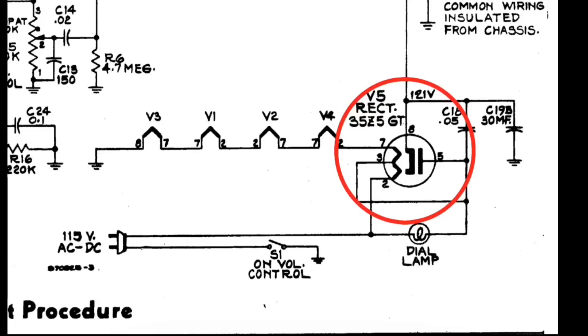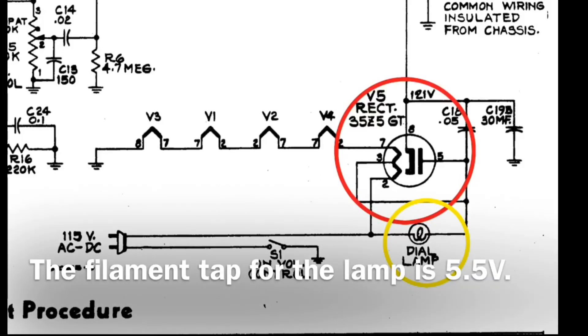So the 35Z5GT tube is a half-wave rectifier, very common in the AC-DC sets or All-American 5 sets for this period of time. The filament voltage is 35 volts, as denoted by the prefix, and it's rated at 0.15 amps or 150 milliamps. If you look down here to the dial lamp itself, in our case a type 47 lamp was used, rated at 6.3 volts and 150 milliamps as well. We'll talk about the configuration here in just a moment.